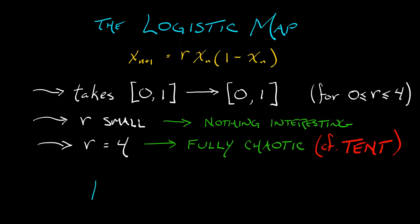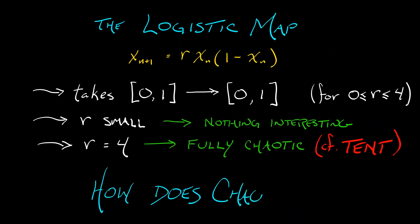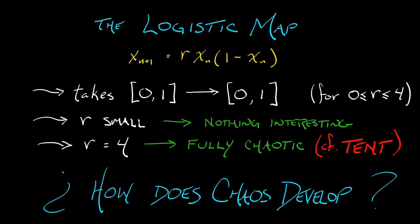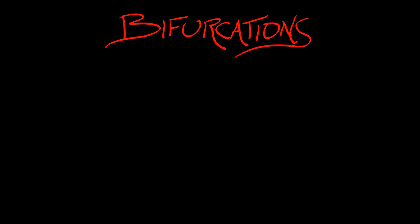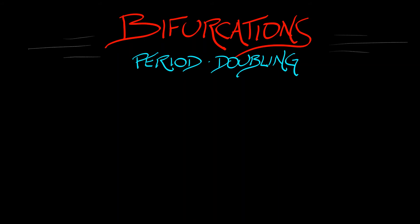So the question is, how does chaos develop? There's nothing there when r is small. When r gets all the way up to 4, we have full chaos. How did that come into being? Well, that has to happen through bifurcations — and in this case, through period-doubling bifurcations. Let's see how this works.